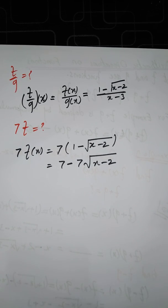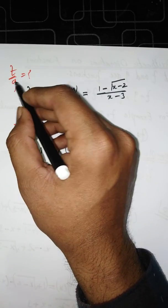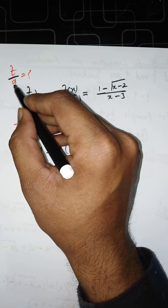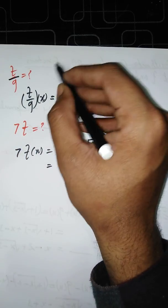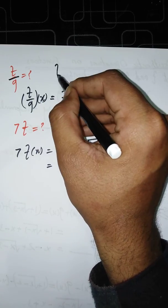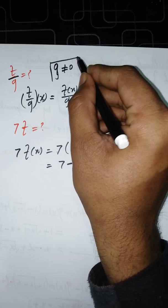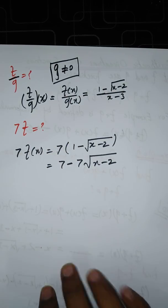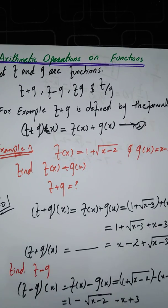So whenever you have two or more functions, you can add them, subtract them, multiply them, and also divide them. But whenever you divide, keep in mind the denominator must be non-zero — G of x must not equal zero. This is arithmetic operations on functions. Thank you for watching. Please subscribe to my channel and press the notification button for more lectures.